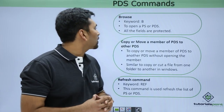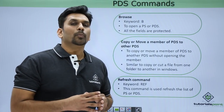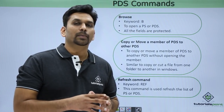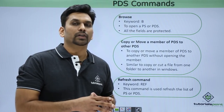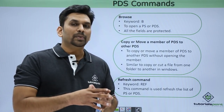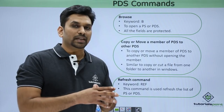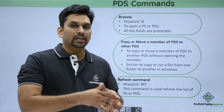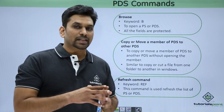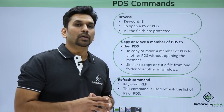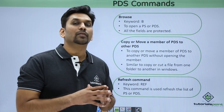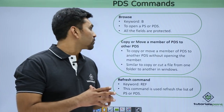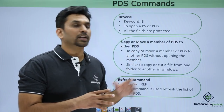First we will start with browse. If you want to open a member in browse mode, you simply need to write B in front of it and hit enter. It can be done on a PS or on a PDS member. All the fields present in that file will be protected and you will not be able to edit it, so it is just for reading purpose.